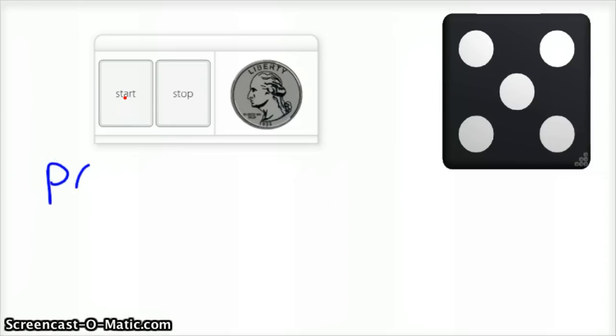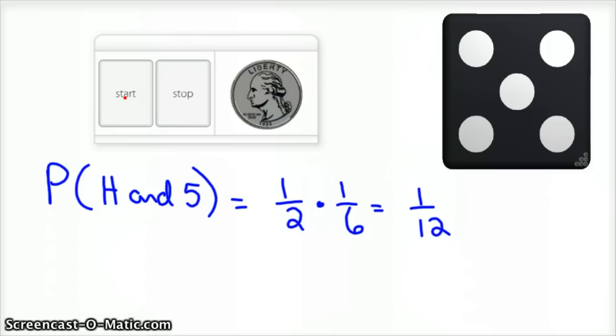So the probability of an H and a five. The probability of flipping a coin to get a head is a half, and the probability of rolling a dice, there's one five out of six total. So your probability of both occurring at the same time when you do them both is one twelfth. So it's just multiplication.